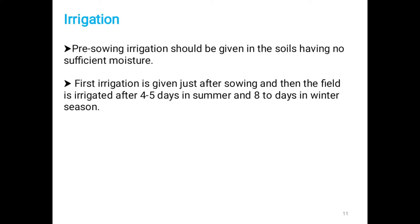Pre-sowing irrigation should be given in soils lacking sufficient moisture. First irrigation is given just after sowing; thereafter, the field is irrigated at 4–5 day intervals in summer and 8–10 day intervals in winter.